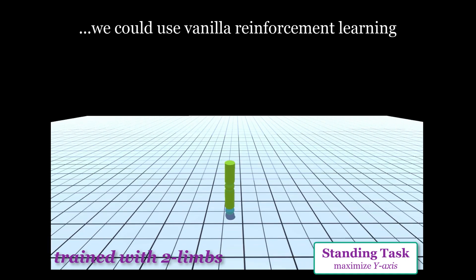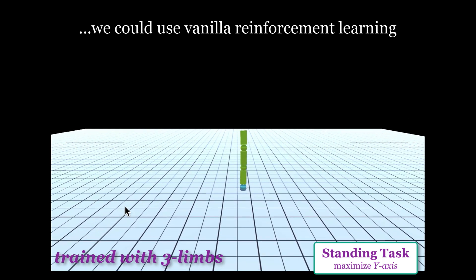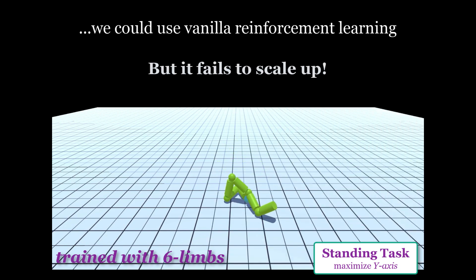If the agent has one limb, it's trivial, and with two limbs, it's pretty easy. Same thing for three limbs. But if you have more than three limbs, vanilla RL fails to scale up, because the dimensionality of the torque action space becomes too high.